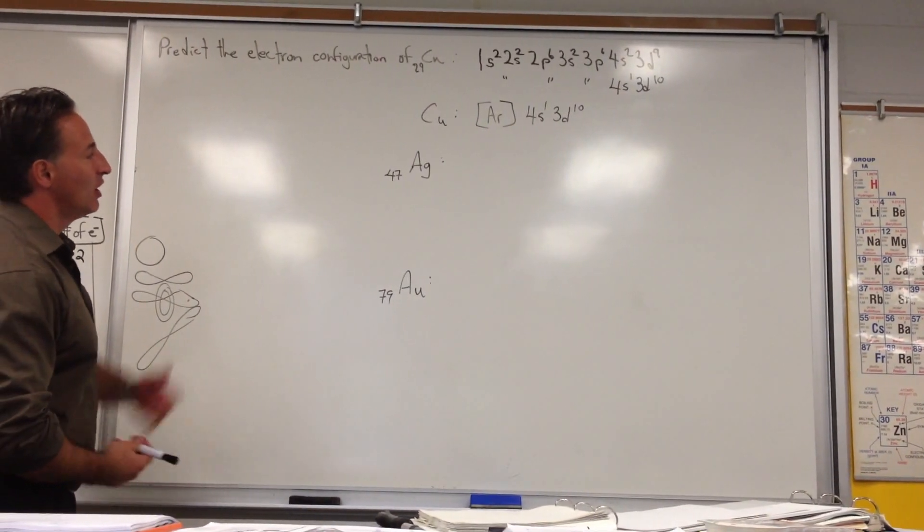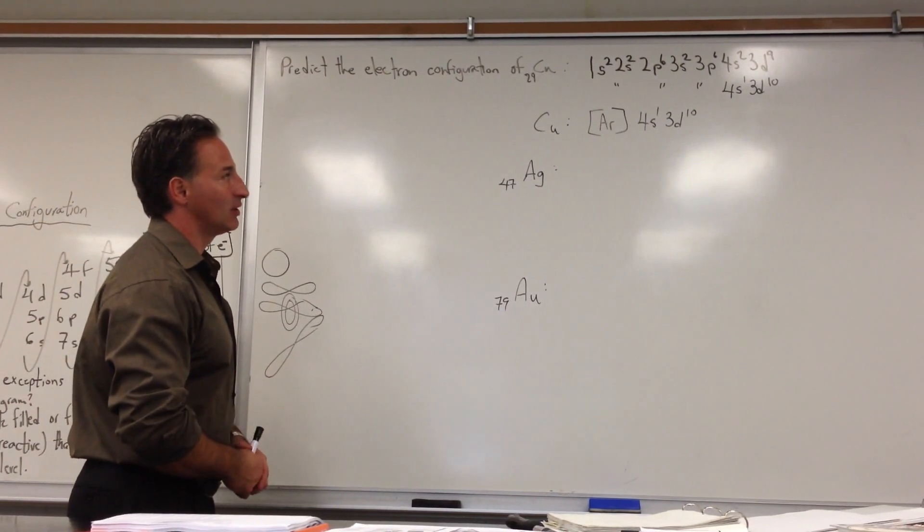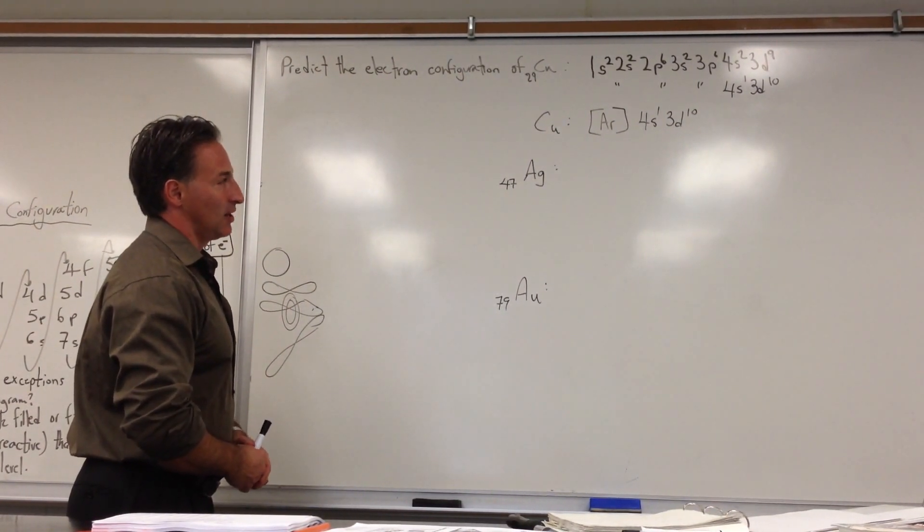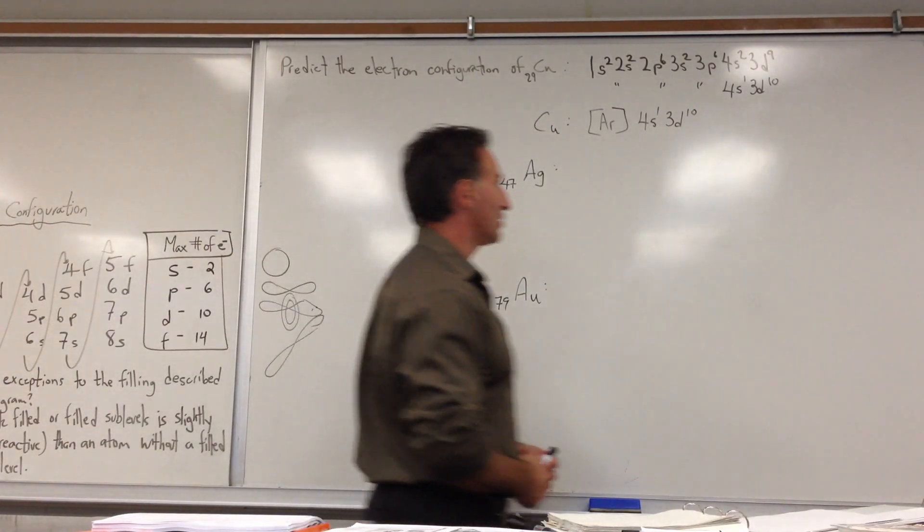The next example is to find the configuration of copper, silver, and gold. And I picked these three coinage metals because they're particularly stable. They don't undergo oxidation easily. And part of the reason is because they have a stable electronic configuration.